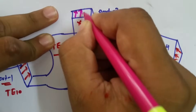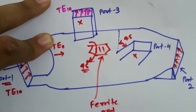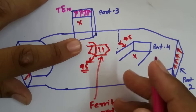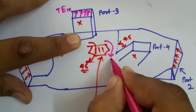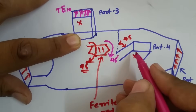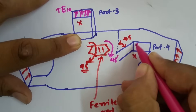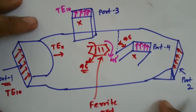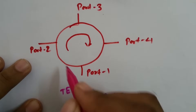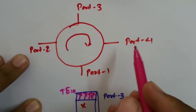Let us take one more example to understand what happens inside if we give input at port 3 with TE10 mode. Its orientation is this. When it passes through the ferrite rod, it is circulated by 45 degrees, so its orientation will now align with port 4. Whatever input we give at port 3 is translated to port 4. So that is how internally the signals are propagated and output is achieved. As per this basic block diagram, if input is given at port 1, output will be at port 2 and at other ports output will be zero.